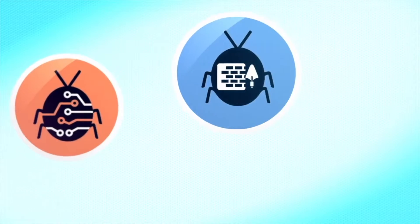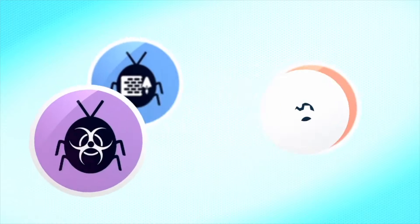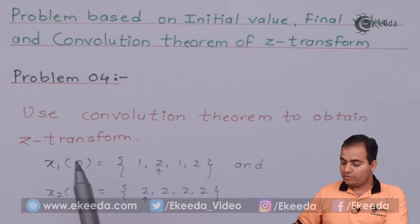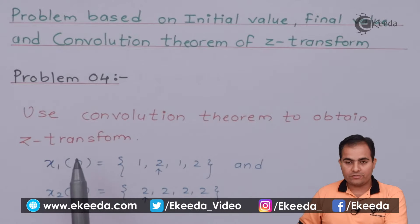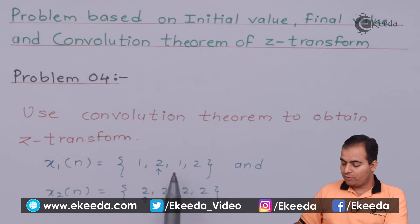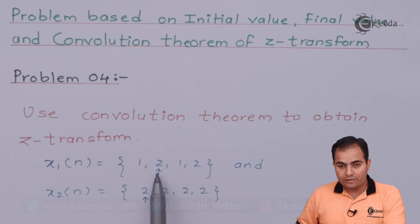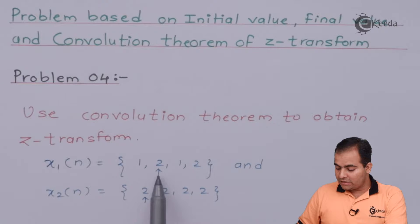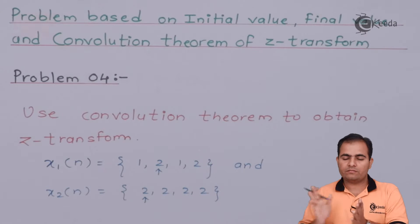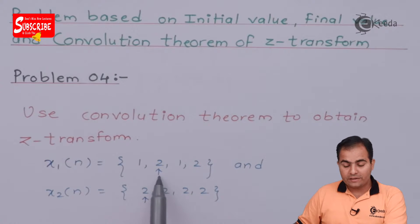Now we will move on to the question: use the convolution theorem to obtain the Z-transform where the sequence x(n) is given as {1, 2, 1, 2}, with the arrow marked on the second element indicating the origin. So on the left-hand side we have two samples and on the right-hand side we have two samples as well. The origin is placed perfectly at the second sample.